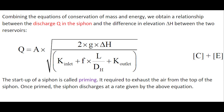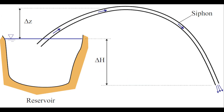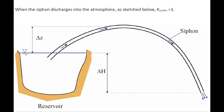The start-up of a siphon is called priming. It is required to exhaust the air or gas from the top of the siphon. Once primed, the siphon discharges at a rate given by the above equation. In the particular case where the siphon discharges into the atmosphere as sketched here, the outlet exit loss coefficient would be equal to 1.